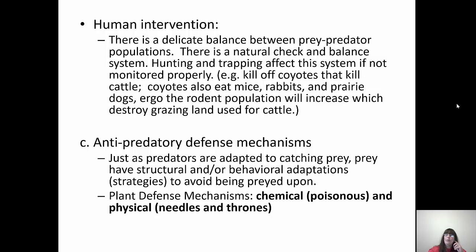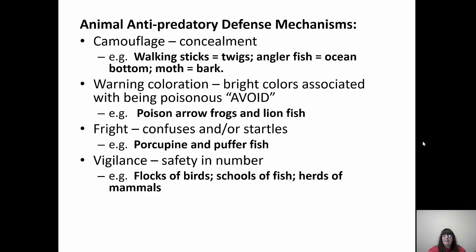Predators adapt to catching prey, and prey adapt to avoid being preyed upon — it's an endless race called the red queen hypothesis, where they co-evolve together. Predators get better at catching prey just as prey get better at avoiding capture. Plants even have defense mechanisms: poisonous chemicals, needles, and thorns that hurt herbivores. Animals have anti-predatory defense mechanisms including camouflage — they hide and blend into their background. Walking sticks look like twigs, anglerfish blend into the ocean bottom, and moss can look like bark.